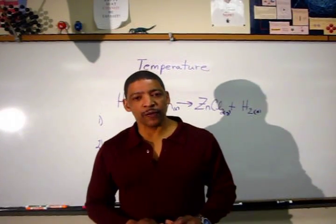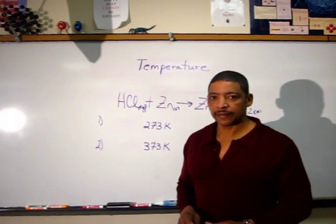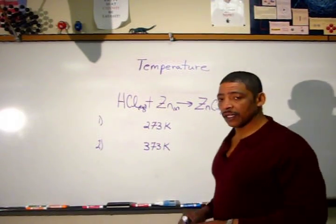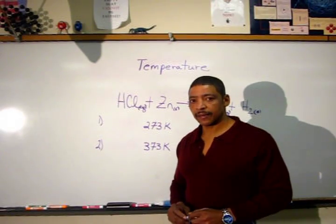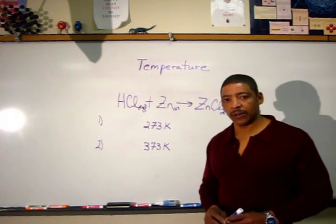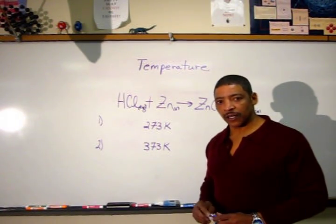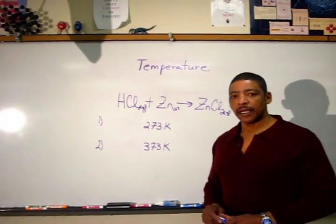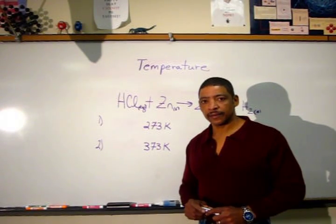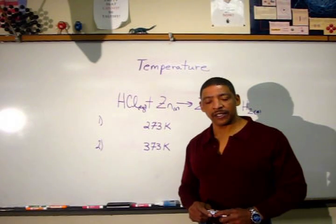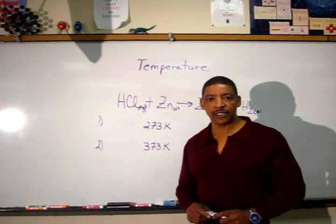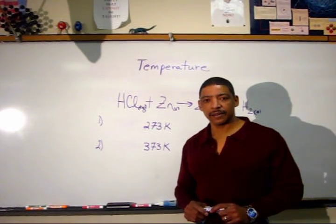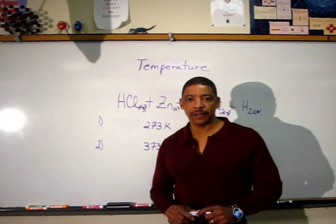The temperature is also very important in determining the rate of a chemical reaction. Consider the following example where hydrochloric acid reacts with zinc metal to produce zinc chloride and hydrogen gas. When this reaction occurs at 273K or 0 degrees Celsius, the rate will be significantly slower than if the reaction occurred at 373K or 100 degrees Celsius. Increasing the temperature increases particle motion, which increases the number of effective collisions — those collisions that possess enough energy and the proper orientation to lead to a product. Therefore, the greater the temperature, the faster the reaction.